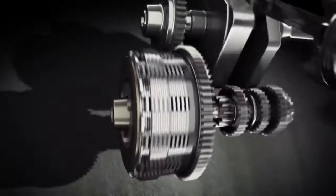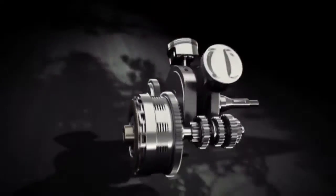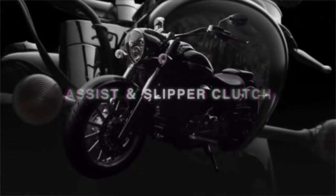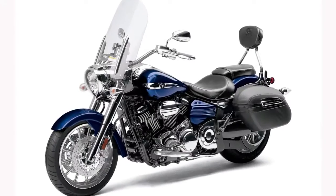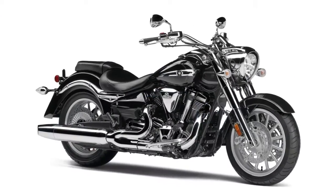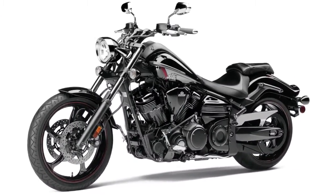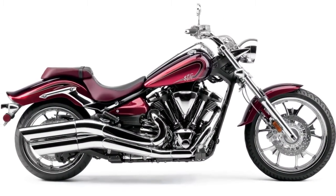Lighter clutch effort, improved clutch engagement, and reduced back torque during downshifting. All advantages of the new assist and slipper clutch. And only available on the 2013 Stratoliner S, Roadliner S, Raider, Raider S, and Raider SCL from Star Motorcycles.